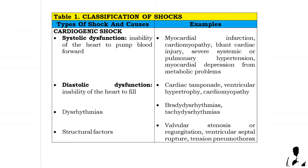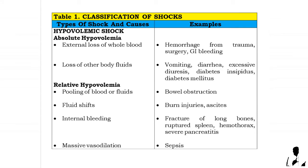Cardiogenic shock causes: systolic dysfunction — inability of the heart to pump blood forward — with examples including myocardial infarction, cardiomyopathy, blunt cardiac injury, severe systemic or pulmonary hypertension, and myocardial depression from metabolic problems. Diastolic dysfunction — inability of the heart to fill — examples include cardiac tamponade, ventricular hypertrophy, and cardiomyopathy. Dysrhythmias include bradydysrhythmia and tachydysrhythmia. Structural factors include valvular stenosis or regurgitation, ventricular septal rupture, and tension pneumothorax.